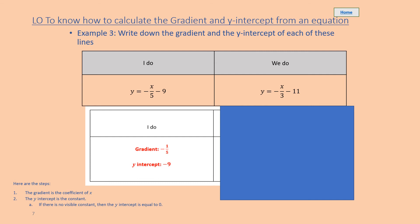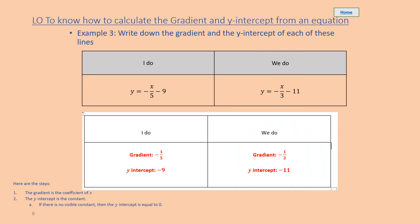Pause the video while you have a go at the we do. That's correct — the gradient is going to be minus one-third, and the y-intercept is going to be minus 11.